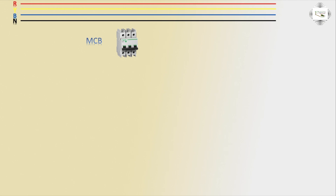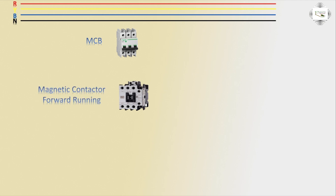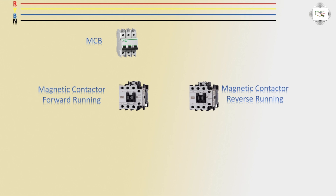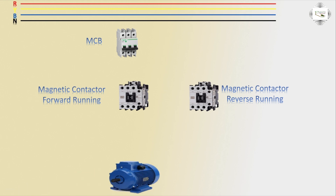First, TPMCB circuit breaker, then magnetic contacts. Using one forward running magnetic contact and one reverse running magnetic contact — two magnetic contacts in use.